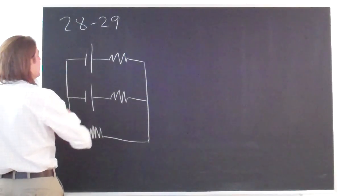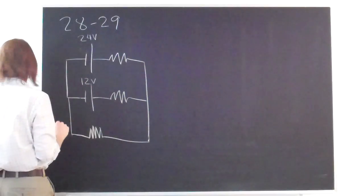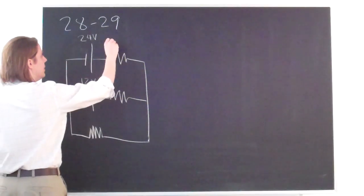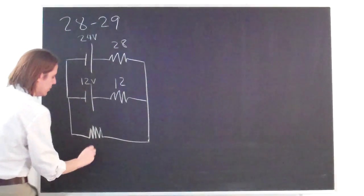So the top battery is 24 volts and the second battery is 12 volts. And these are 28 ohms, 12 ohms, and 16 ohms.